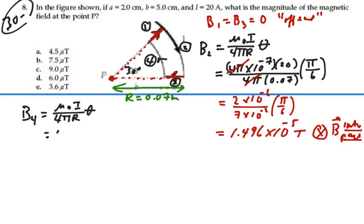We want to find the other one. Let's go here, B₄. B₄ is also a curved segment, so that's going to be μ₀I over 4πr times θ. And that would be 4π times 10 to the minus 7 times 20 amps over 4π.